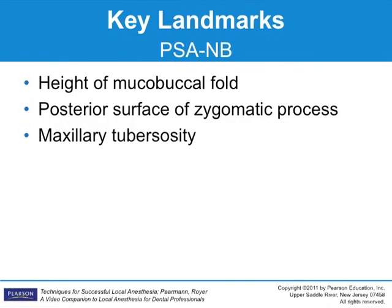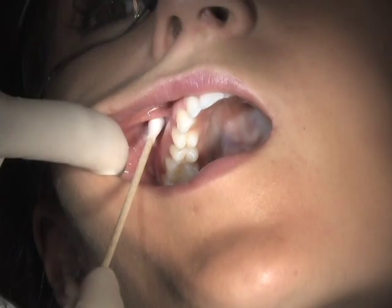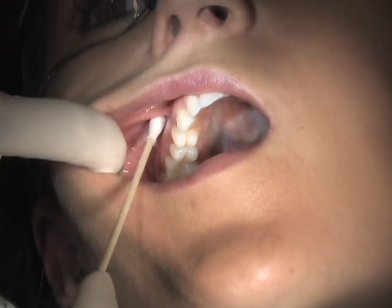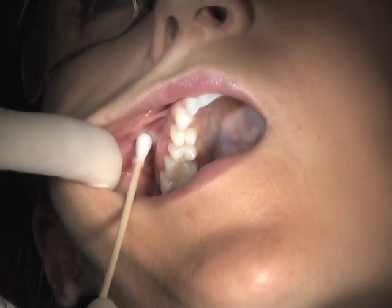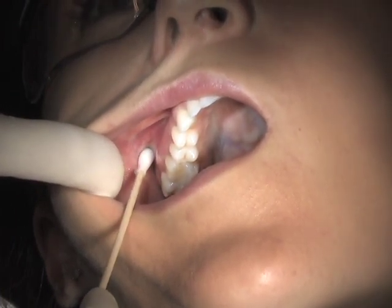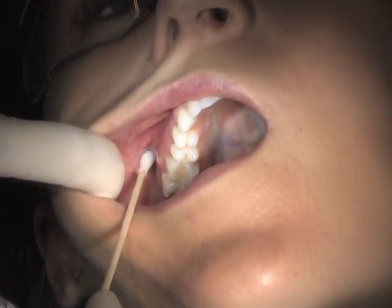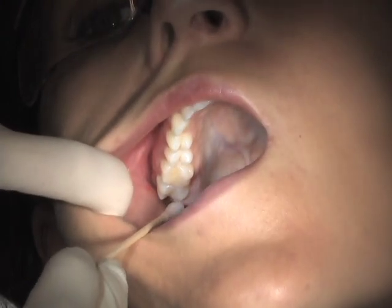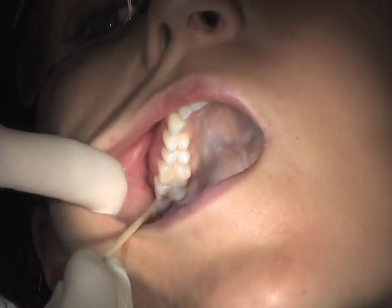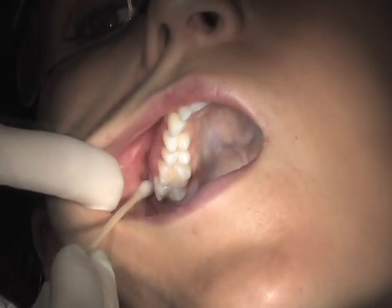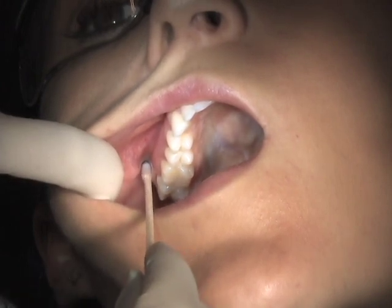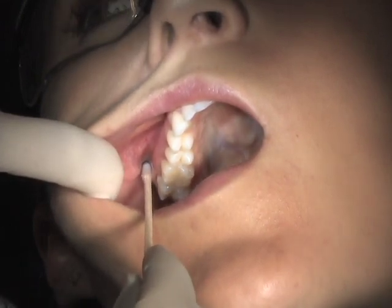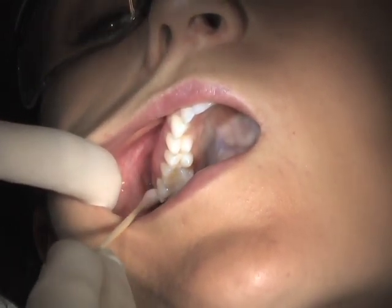Locate and palpate the landmarks for this injection, which are the depression posterior to the zygomatic process, the maxillary tuberosity, the apices of the second molar, and the mucobuccal fold in that area.